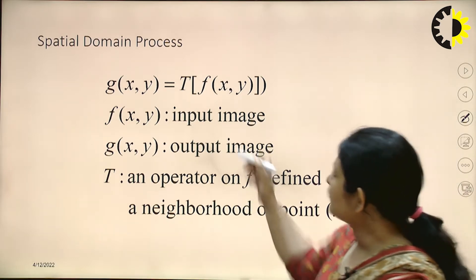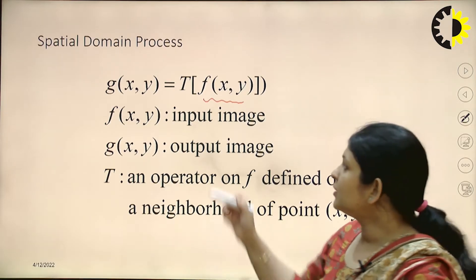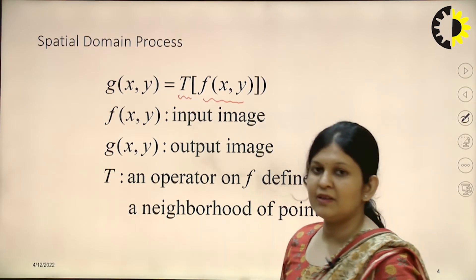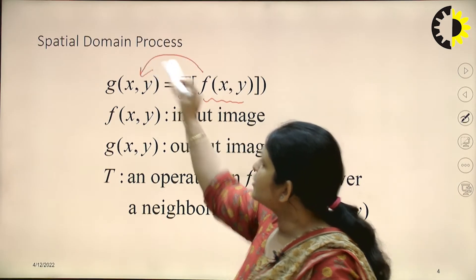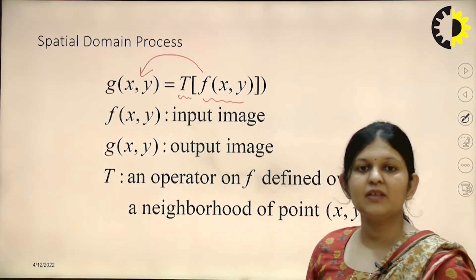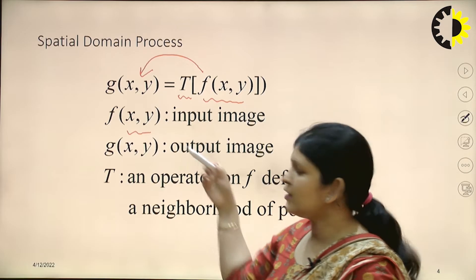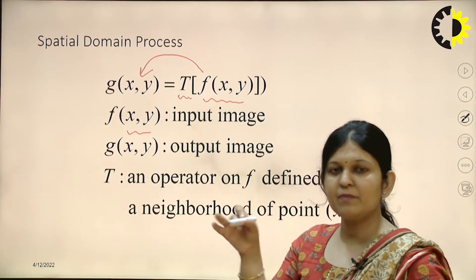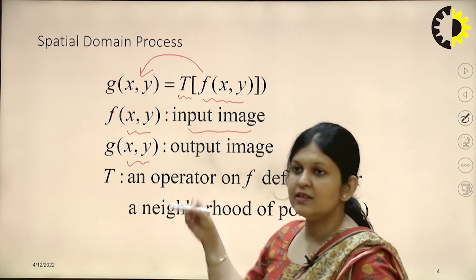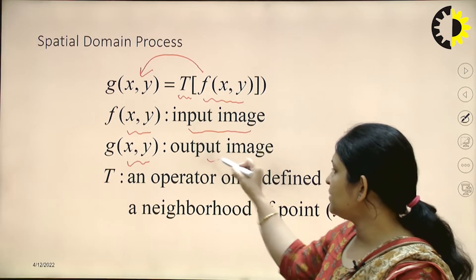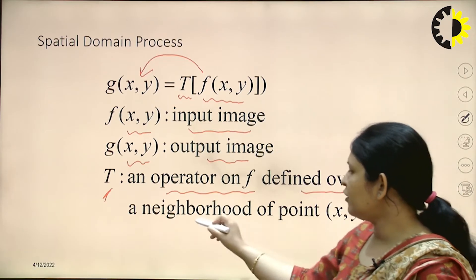In the spatial domain process, we have the input f(x, y) as the input intensity value. We apply some transformation function T. When we apply this transformation function, the pixel value gets converted into some other pixel value, that is intensity value g(x, y). So f(x, y) is the input image applied on each and every pixel, g(x, y) is the transformed or output image, and T is some operation on f defined over a neighborhood of points.